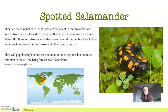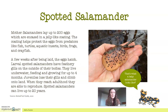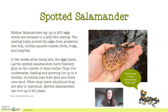Mother salamanders lay up to 200 eggs at a time, which are encased in a jelly-like coating. The coating helps protect the eggs from predators like fish, turtles, aquatic insects, birds, frogs, and crayfish. At this stage in their life they are prey — food for other animals — but the jelly-like coating helps protect them. Remember, they're amphibians, which means they are born in the water, so the jelly-like substance also helps protect them in the water.